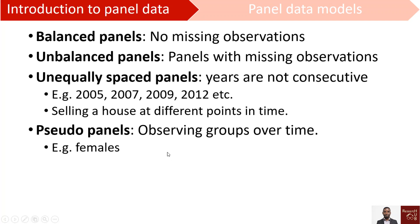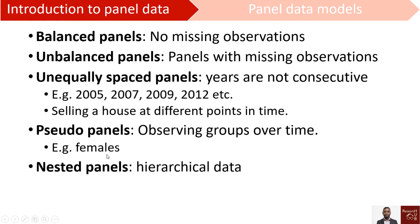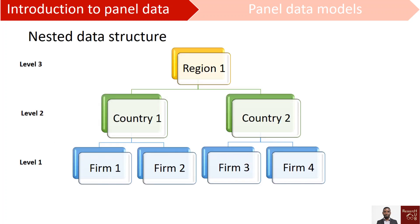Then we have cohort panels. This is where we observe groups — typically categorical variables or indicators — over a long period of time. For example, we study females versus males over a long period of time. Then we have nested panels, also called hierarchical data or panels.